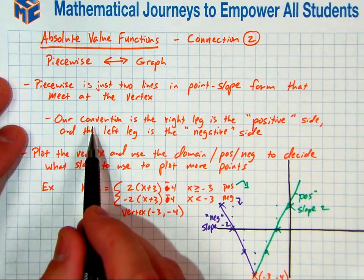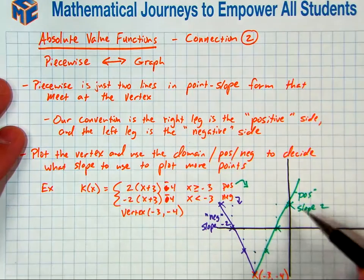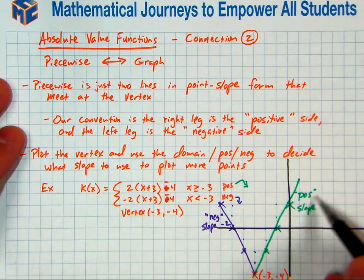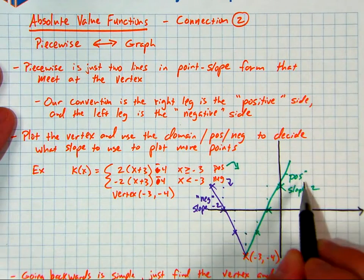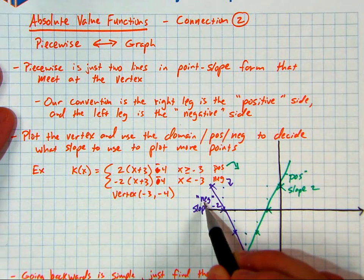Remember what I talked about in the other video, our convention that the right leg is going to be called the positive side. It doesn't matter if the slope is positive or not. We're just going to call the right side the positive side, and the left side the negative side.